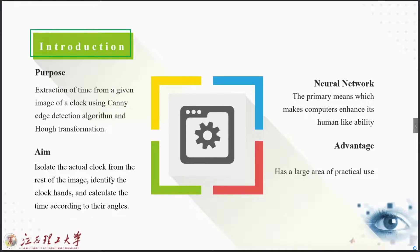The longest thin hand, multiply the number it points to by five, that's the current number of seconds. The purpose of my project is to extract time from a given image of a clock using Canny edge detection algorithm and Hough transformation.